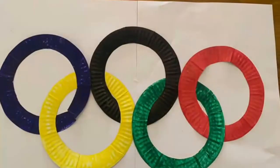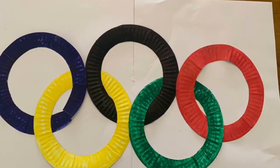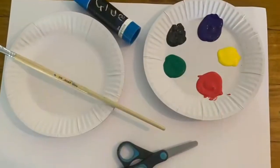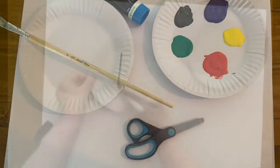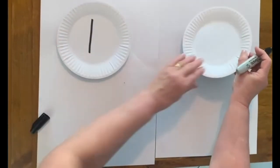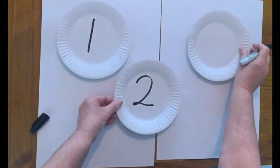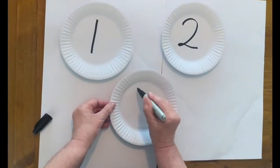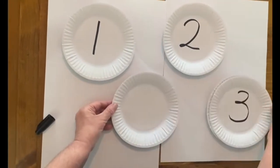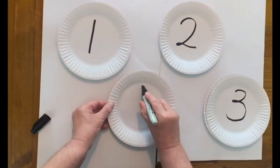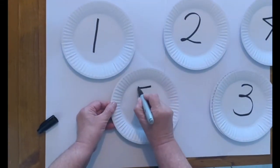Next we're going to make the Olympic rings. For this craft you're going to need five paper plates and some paint. That's one, two, three, four and five.